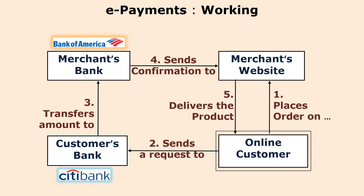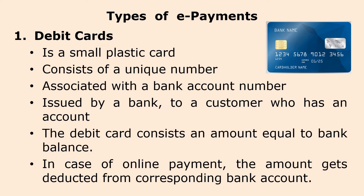So, to summarize: the online customer places an order and sends a request to the customer's bank. The customer's bank transfers the amount to the merchant's bank. The merchant's bank sends confirmation to the merchant, and then the merchant delivers the product. This is the working mechanism of electronic payments. Now let us look at the different types of payments. There are a number of electronic payment systems available.